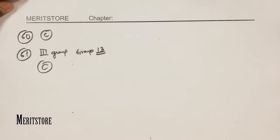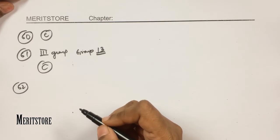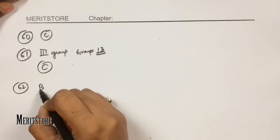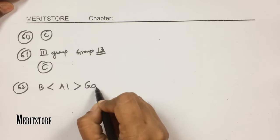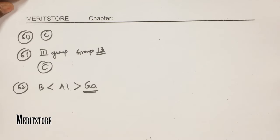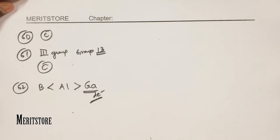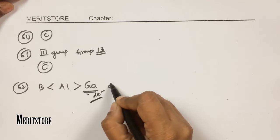Question number 62: the correct order of atomic radii for Group 13 elements. Going down the group, boron is smallest and aluminium is larger. However, aluminium is greater in size than gallium because gallium has d electrons in its inner shells. These d electrons provide poor screening effect, resulting in stronger effective nuclear charge and a smaller atomic size for gallium. Therefore option D.